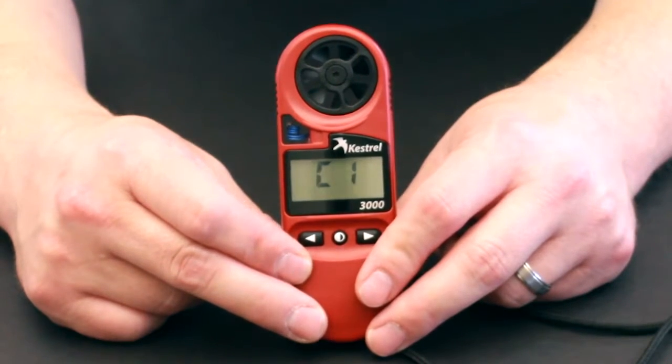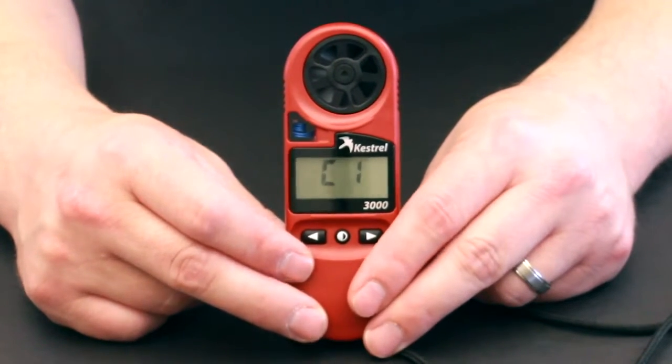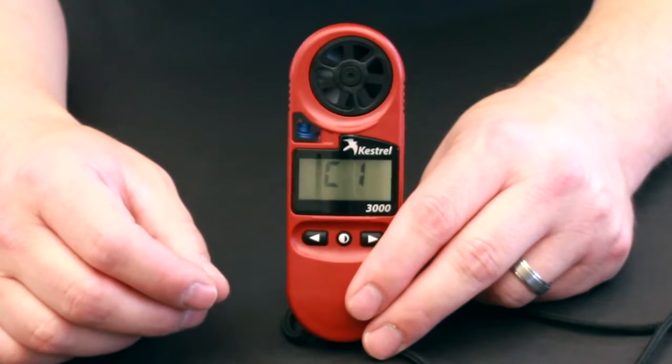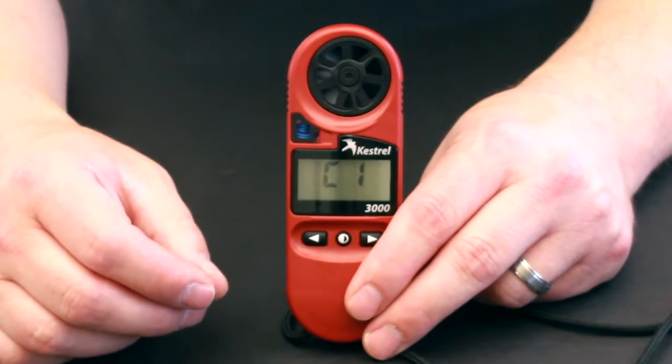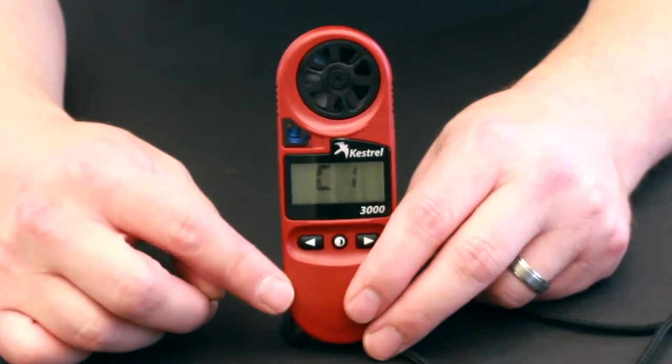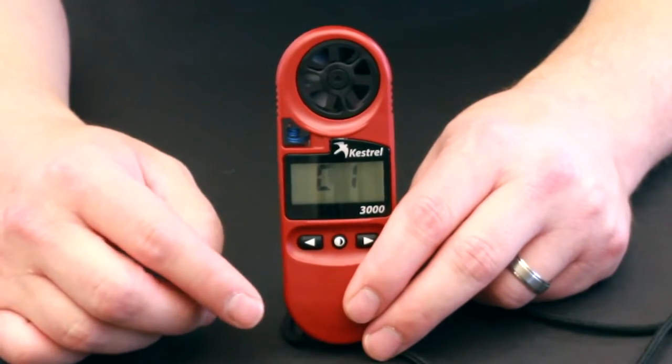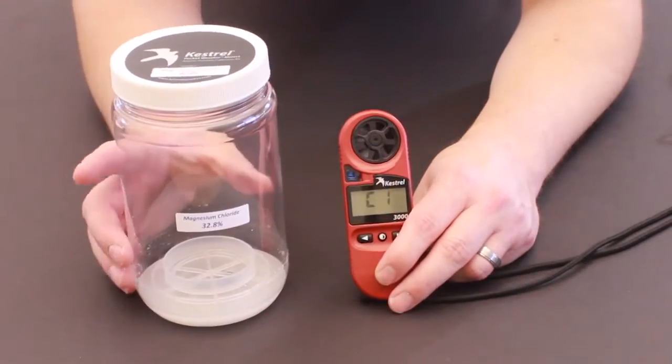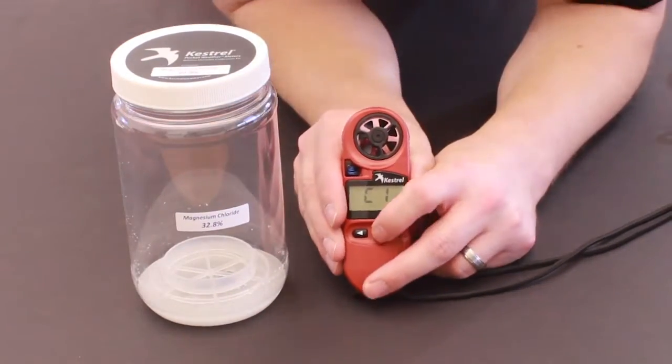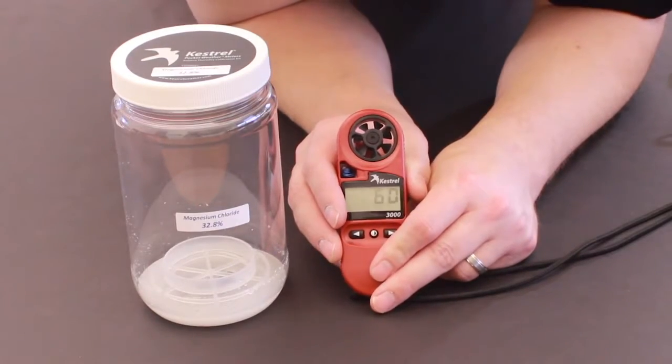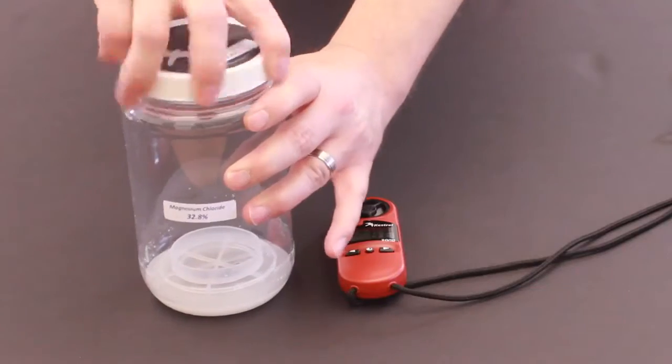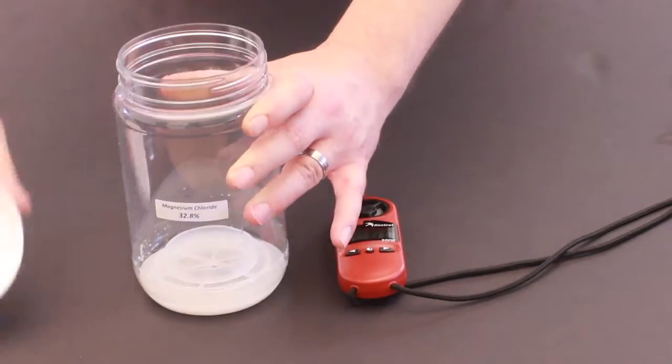Once we hit the center button, we're going to have to put this unit upside down into the first chamber, which is the magnesium chloride chamber. Please note, if you have a two-button Kestrel, the instructions tell you to do these in the reverse order. Once we get the magnesium chloride chamber, we're going to hit the center button and you'll start seeing it flash C1 and 60. This means that it's going to go for 60 minutes in this magnesium chloride chamber.